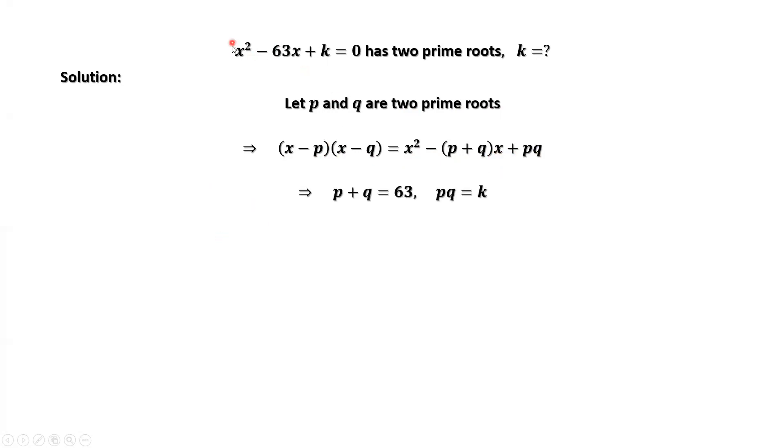Because the constant in front of x² is 1, here the constant in front of x² is also 1. Now we can compare the coefficients of this equation and this expression. This implies 63 = p + q, k = pq.